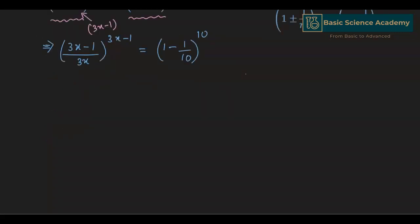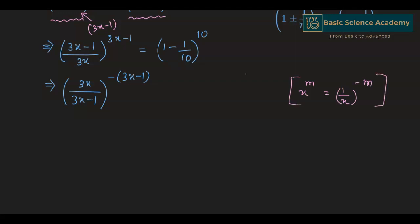Since we need 3x minus 1 in the denominator, we have to flip this equation. So 3x divided by 3x minus 1, to the power of minus of 3x minus 1. When we flip this equation the sign of the power will change, in accordance with x to the power of m equals 1 by x to the power of minus m. So this equals to 1 minus 1 by 10 to the power of 10.